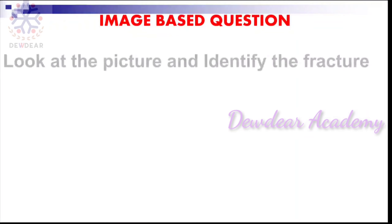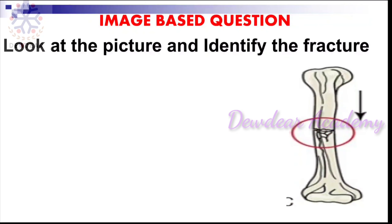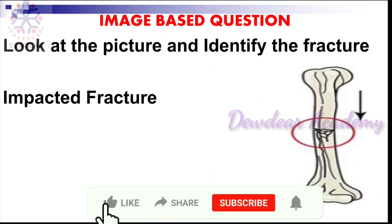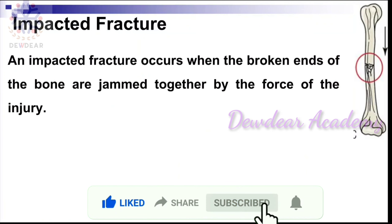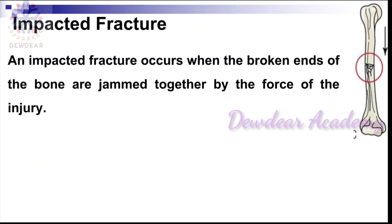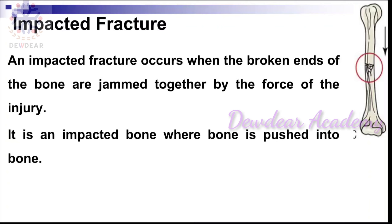Next question: look at the picture and identify the fracture. The answer is impacted fracture — it is a fracture where bone is pushed into bone. An impacted fracture occurs when the broken ends of the bone are jammed together by the force of injury.